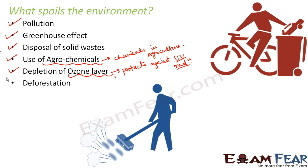Deforestation — meaning the cutting down of trees and forests — is another threat. For human benefit, we cut down or burn trees, losing greenery. Without plants, the existence of life would not be possible, because plants and animals balance each other: plants utilize carbon dioxide during photosynthesis and produce oxygen, while animals breathe in oxygen. So destroying all plants would make it very difficult for animals to survive.